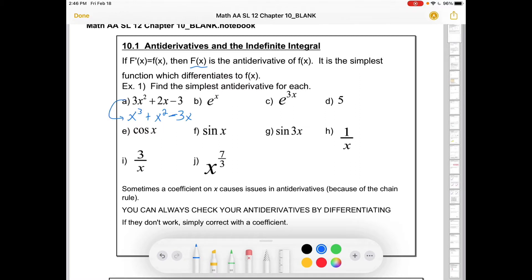And I can always check it by differentiating. So if I differentiate this, let's see what I get. I'd get 3x squared plus 2x minus 3, kind of like checking factoring by foiling. We're doing the opposite operation. And since it got us back where we started, this is the correct antiderivative.